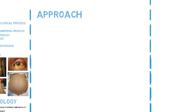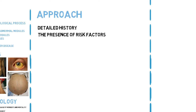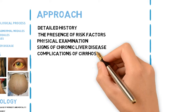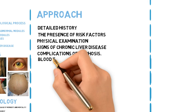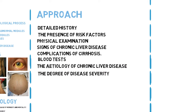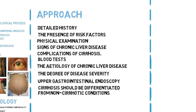Approach. The evaluation of a patient with suspected chronic liver disease and cirrhosis should begin with a detailed history identifying the presence of risk factors for the different causes of cirrhosis. Patients should then undergo a thorough physical examination to elicit any signs of chronic liver disease or complications of cirrhosis. A full panel of blood tests should be undertaken to establish the etiology and degree of disease severity. An upper gastrointestinal endoscopy should be performed in patients with cirrhosis to screen for esophagogastric varices. Cirrhosis should be differentiated from non-cirrhotic conditions that can also lead to portal hypertension.